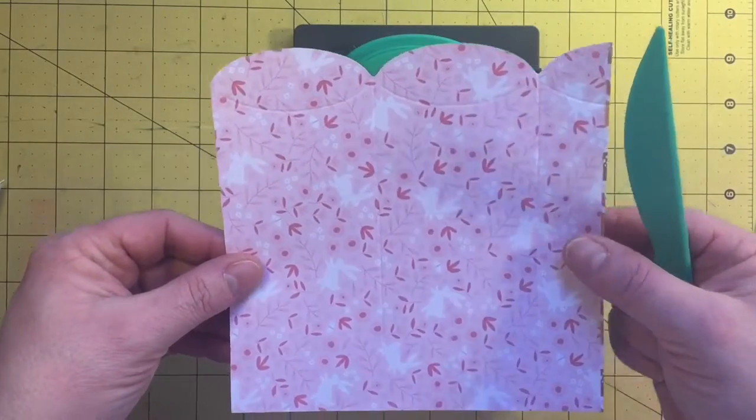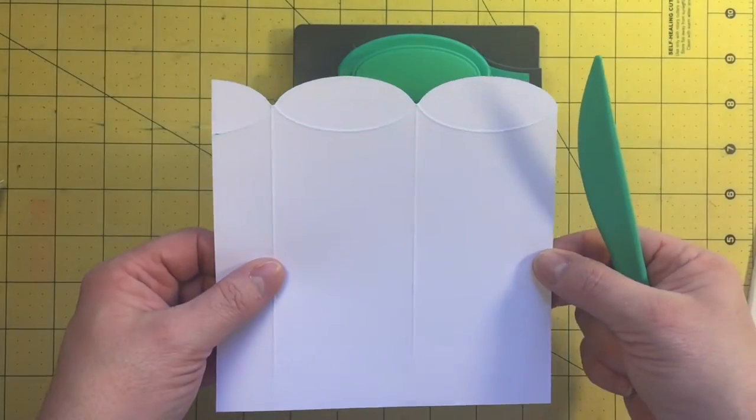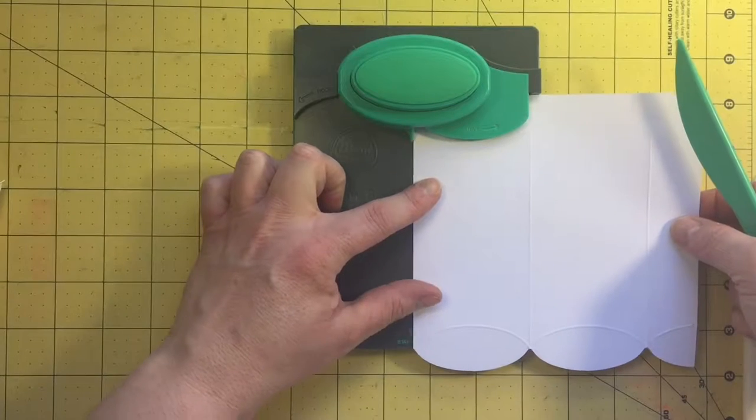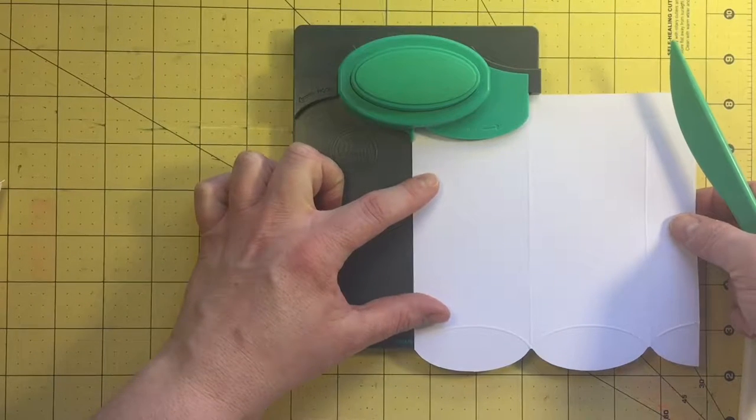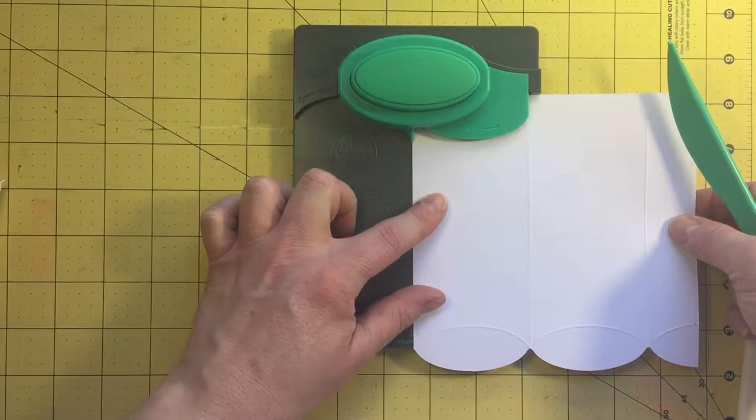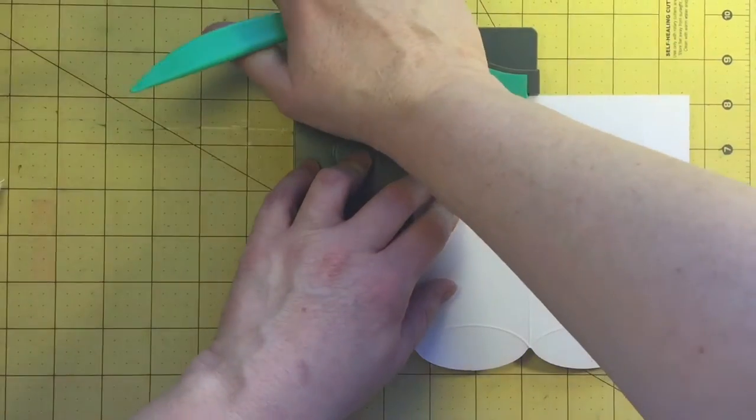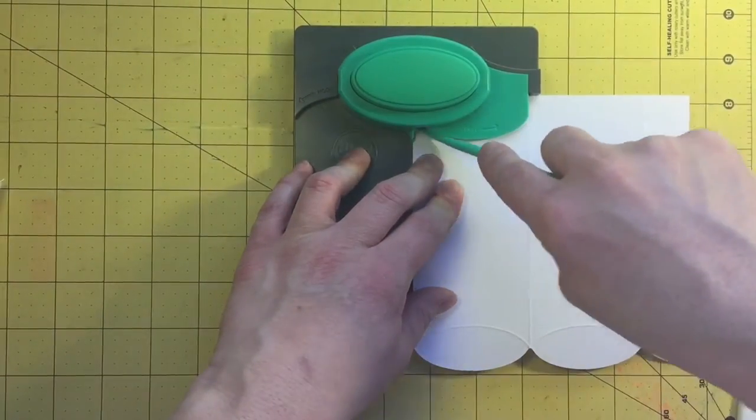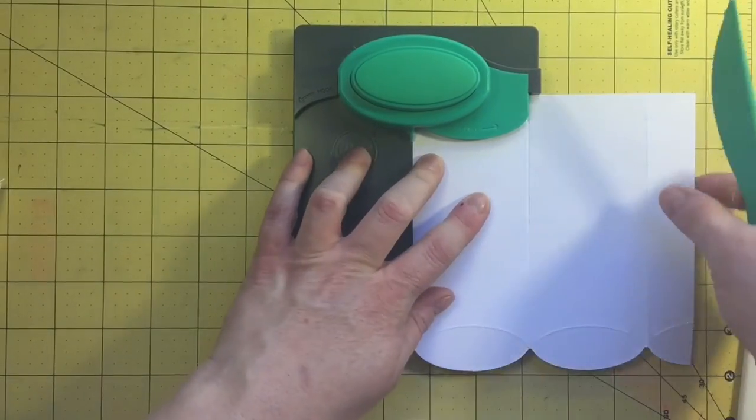Now you're going to flip the paper over and turn it around to the other straight edge that's opposite of what you just did. You're going to punch, line it up with the start line, punch, score around the curve, and down the straight edge. And they should all match up.